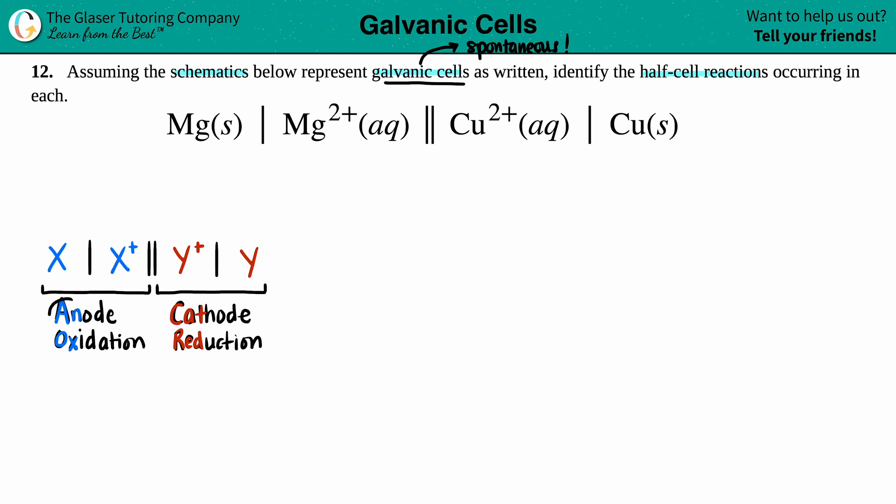Just know that the way these are represented is that the first one is always going to be the anode, aka the one that's undergoing oxidation. You could remember this by thinking of An-Ox. So anode oxidation always happens at the anode. Remember, oxidation means that you lost electrons.